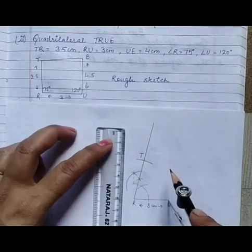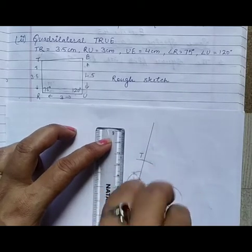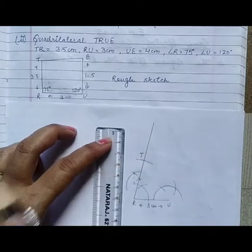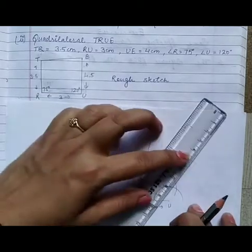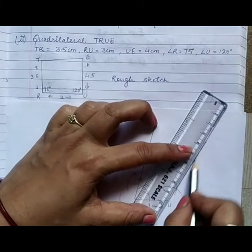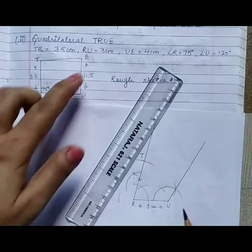Now here this is 60, this is 120, so here it is angle of 120 degrees. Now this is 4.5 cm.